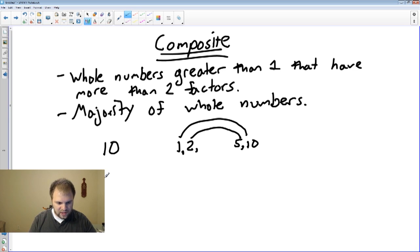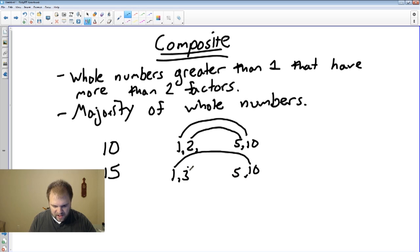Another example would be 15. It has 1 and 15 and 3 and 5. Once again, more than 2 factors, thus it is composite.